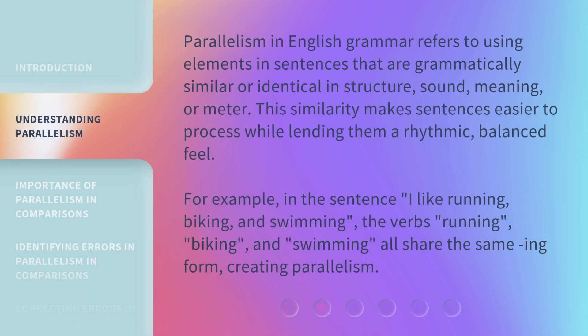Parallelism in English grammar refers to using elements in sentences that are grammatically similar or identical in structure, sound, meaning, or meter. This similarity makes sentences easier to process while lending them a rhythmic, balanced feel. For example, in the sentence 'I like running, biking, and swimming,' the verbs running, biking, and swimming all share the same -ing form, creating parallelism.